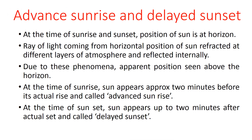At the time of sunrise and sunset, the position of the sun is at the horizon. A ray of light coming from this horizontal position of the sun is refracted at different layers of the atmosphere and reflected internally. Due to this phenomena, the apparent position is seen above the horizon. At the time of sunset, the sun appears up to 2 minutes after its actual set, and this is called delayed sunset. These are some phenomena discussed on the basis of atmospheric refraction.